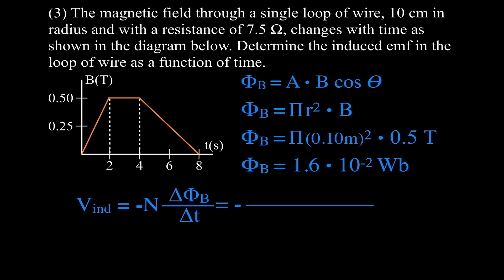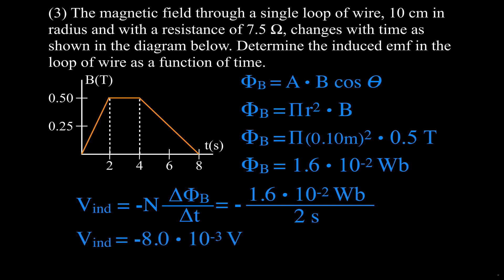The flux goes from 0 to 1.6×10⁻² Webers — the change is 1.6×10⁻² Webers. Dividing by the time of 2 seconds and applying the minus sign, the induced voltage during the initial 2 seconds is −8.0×10⁻³ volts.